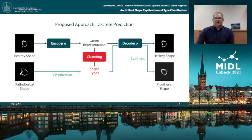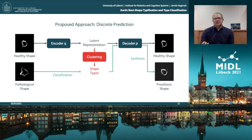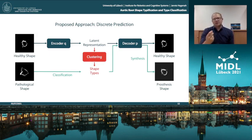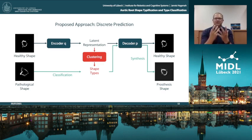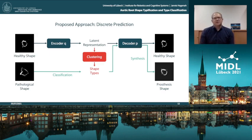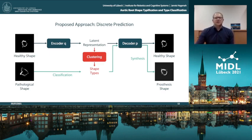In the inference step, if we know the pathological shape, we map to the latent space but only to the shape types — we map to the individually optimal shape type that can serve as a prosthesis. This is now a classification problem, because we don't draw from a continuum but only from this discrete set of shape types. And once again, we can synthesize an image of this prosthesis using the decoder network.